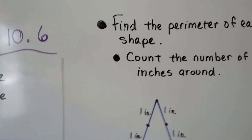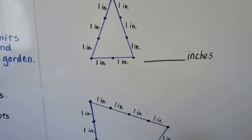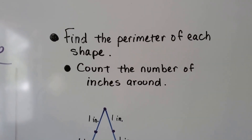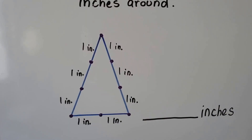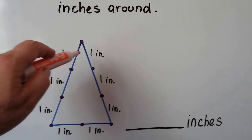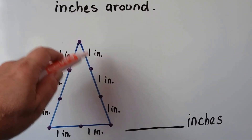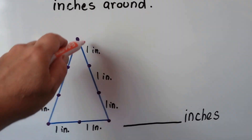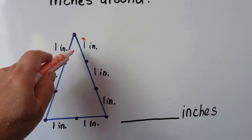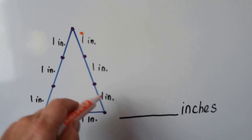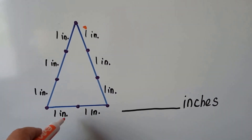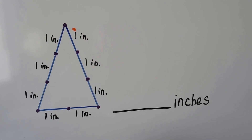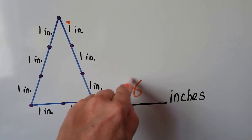So we can find the perimeter of each of these shapes. We just count the number of inches around. We start at some place where we know where we're going to start, and we have to make sure we don't count it two times. Counting: 1, 2, 3, 4, 5, 6, 7, 8. The perimeter of this triangle would be eight inches.